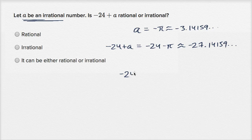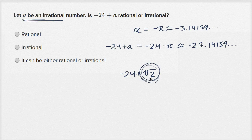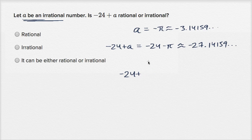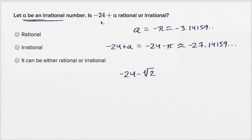And if A was the square root of two, then negative 24 plus the square root of two would have a decimal expansion that goes on forever and never repeats — the part to the right of the decimal matches the square root of two. In general, when you add a rational number to an irrational number, the result is irrational. We prove it in other videos — a rational plus an irrational is going to be irrational.